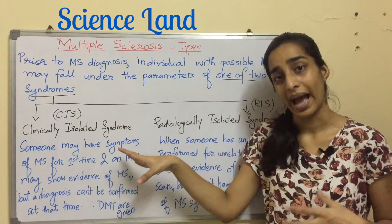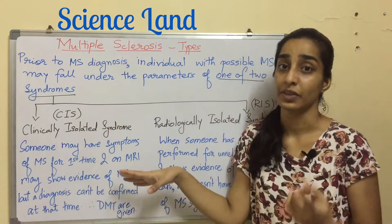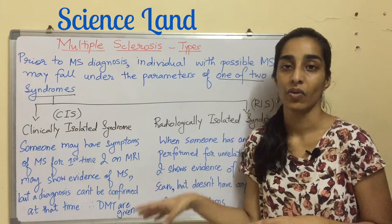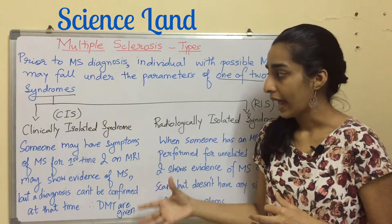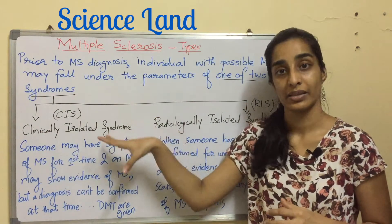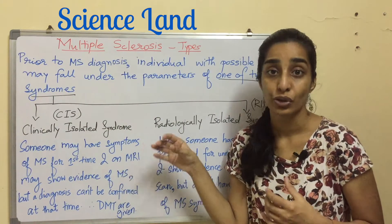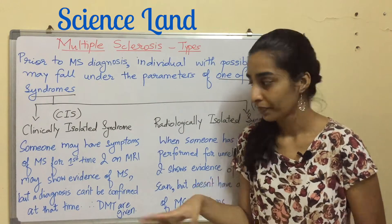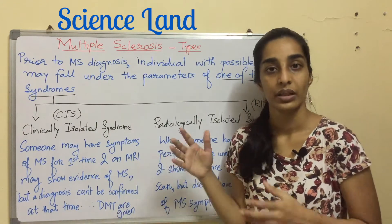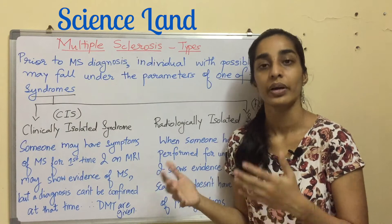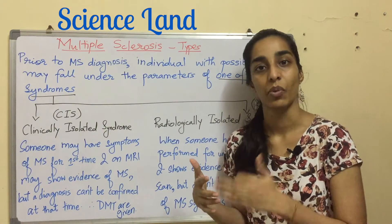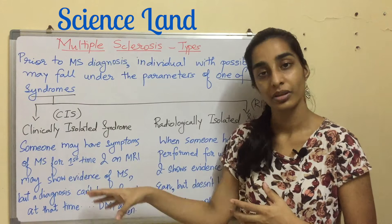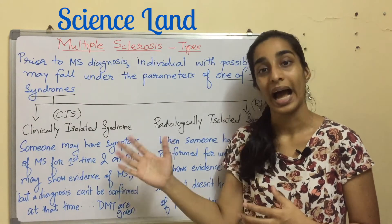What is CIS? Someone may have symptoms of multiple sclerosis for the first time and an MRI may show evidence of multiple sclerosis, but a diagnosis cannot be confirmed at that time — that's why it is known as clinically isolated syndrome. The symptoms are there and the MRI scan shows evidence of MS, but the diagnosis is not yet confirmed. In this picture, DMTs — disease modifying treatments, also known as DMDs, disease modifying drugs — are given so that if a diagnosis is confirmed, the patient will have the benefit of taking the drugs at an earlier stage.